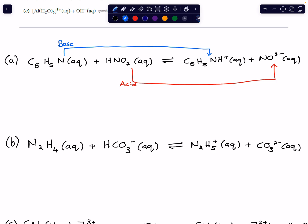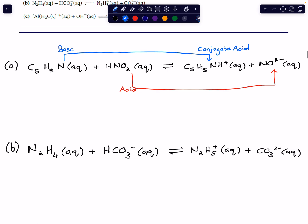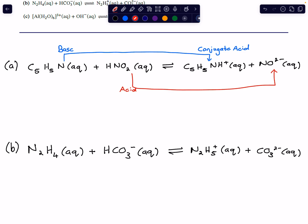Subsequently, on the product side of the equilibrium, conjugate species form. The base forms a conjugate acid — meaning the base that has been protonated by the acid forms a species that can act as an acid again. In the reverse reaction, it acts as the acid, protonating the NO2⁻ to reform our reactants. That is why it is called our conjugate acid.